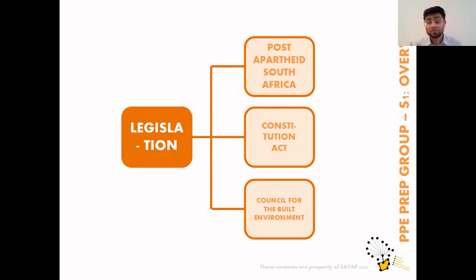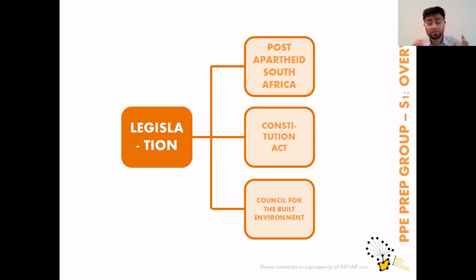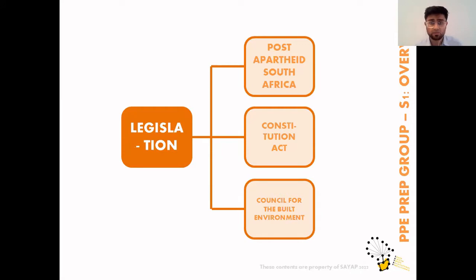Legislation is generally ascribed to Paper 1. In Paper 1 of the PPE exam — the Professional Practice Exam — you're going to mainly talk about the reasons why SACAP, the South African Council for the Architectural Profession, has come into place, the things they are in charge of, and a lot about professional conduct. A lot of Paper 1 is about you as a practicing professional: the practice of architecture, how to ensure your relationships with clients are seen in a professional manner, how you'd be dealt with if there was misconduct, and how to start your own firm.